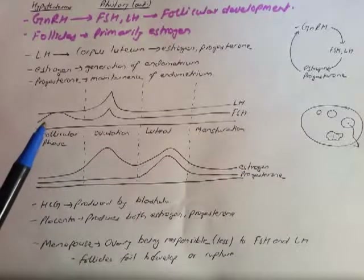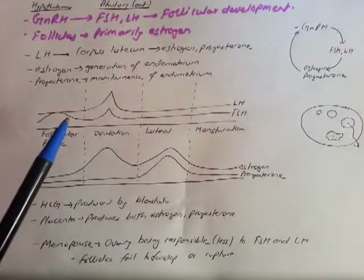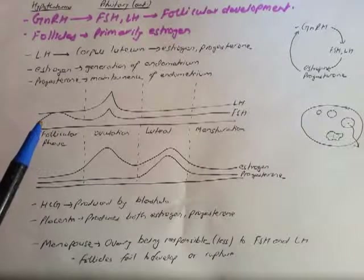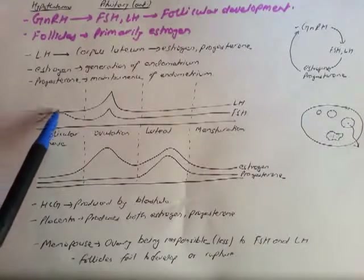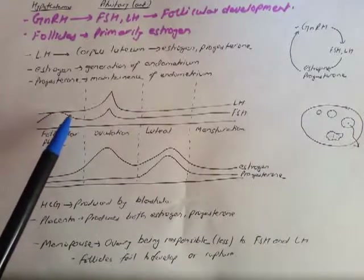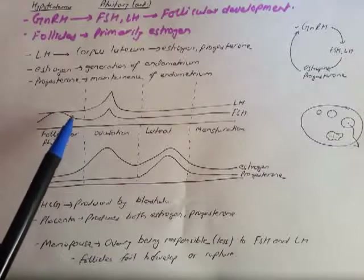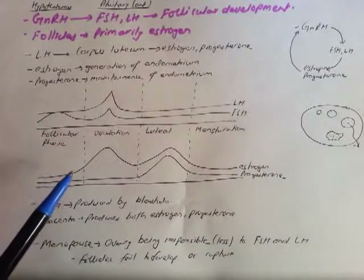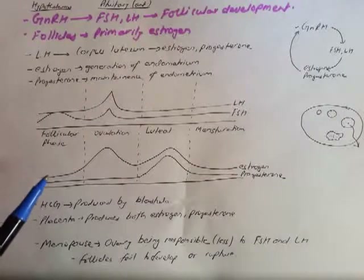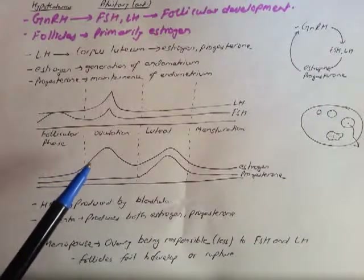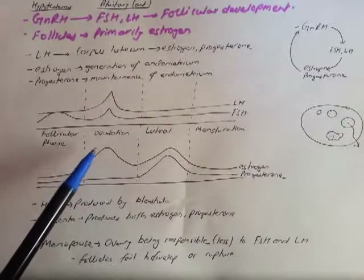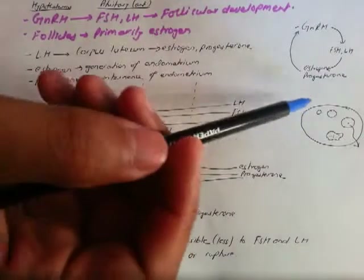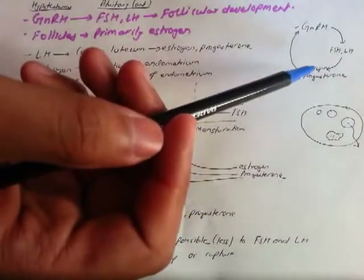The key point is: less estrogen and progesterone causes increased production of FSH and LH. The increased FSH and LH leads to the development of follicles, and the developing follicle in turn produces more estrogen, which is evident in the graph — we can see estrogen rising here.